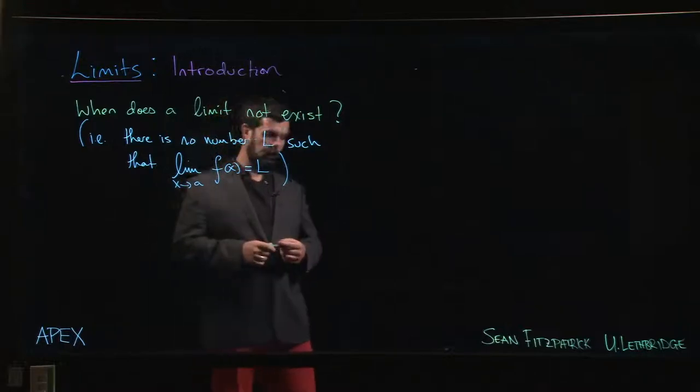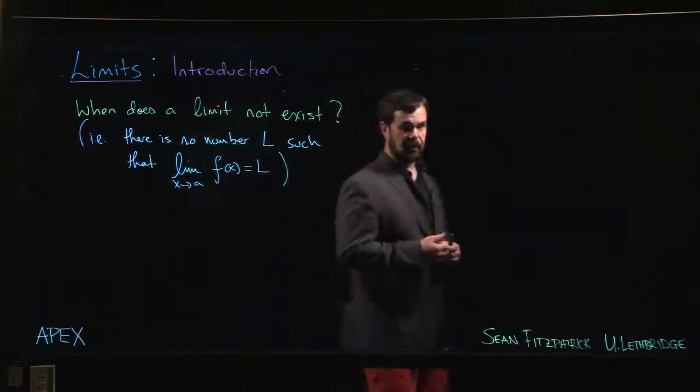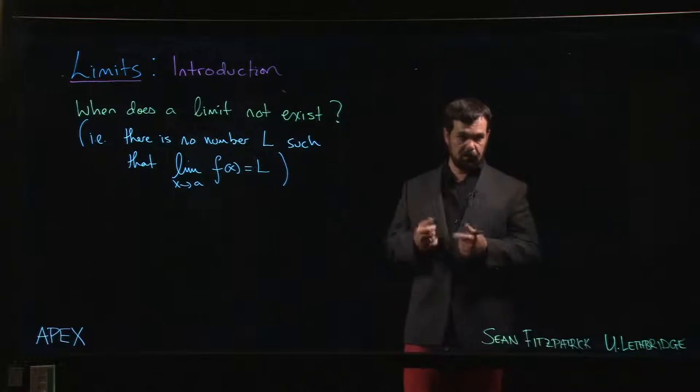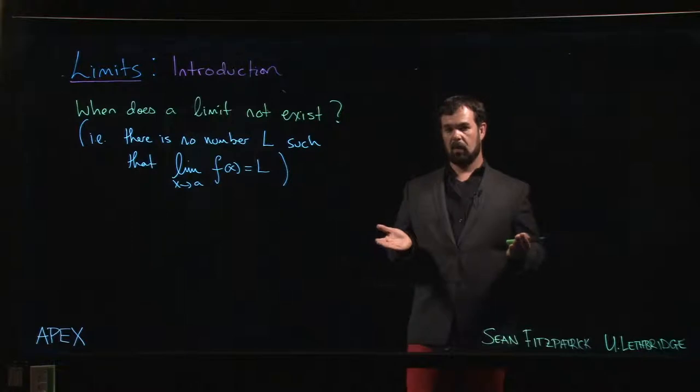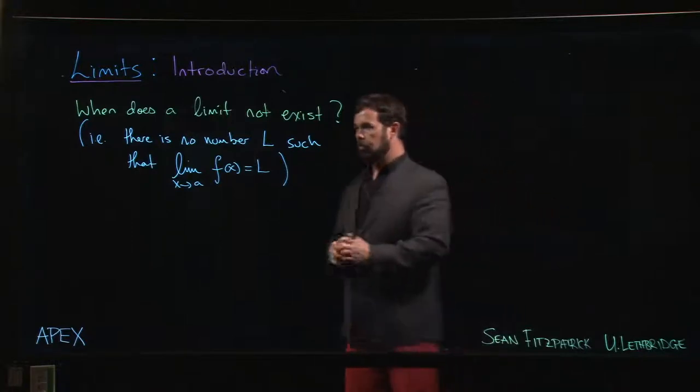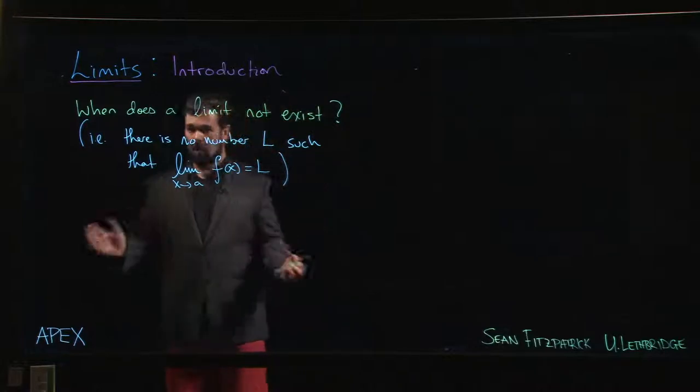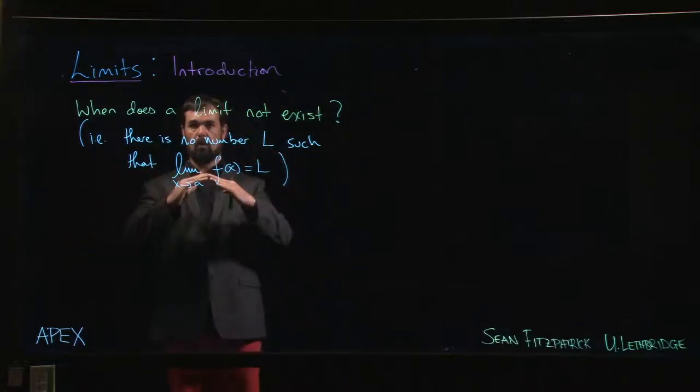In cases where the function was not actually defined at the point we were interested in, but nonetheless for x values near that point, we were able to work out y values. We found that as we got closer to that point, our y values were all moving towards some common value which we called the limit.